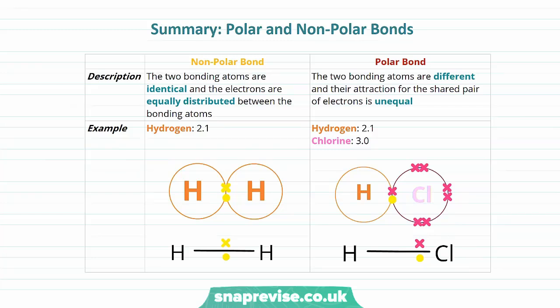To summarize polar and non-polar bonds: a non-polar bond occurs when the two bonding atoms are identical and electrons are equally distributed. For example, two hydrogen atoms bonded together both have an electronegativity value of 2.1, so the bond is non-polar. In a polar bond, the two atoms are different and attraction for the shared pair is unequal - hydrogen has electronegativity 2.1 and chlorine 3.0, so the electrons are attracted to and held closer to the chlorine atom.